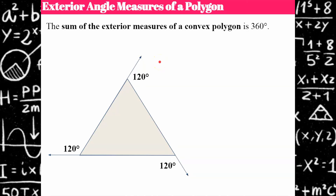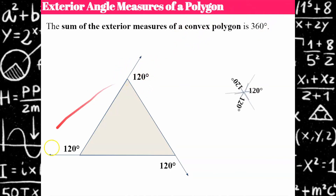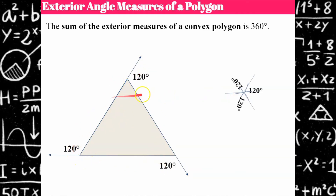This is one of those characteristics all convex polygons have in common that's difficult for students to embrace. If you snip each exterior angle and place their vertices together, they form a perfect circle — 120 times 3 equals 360. Even an octagon's eight exterior angles would total 360 degrees and form a perfect circle.